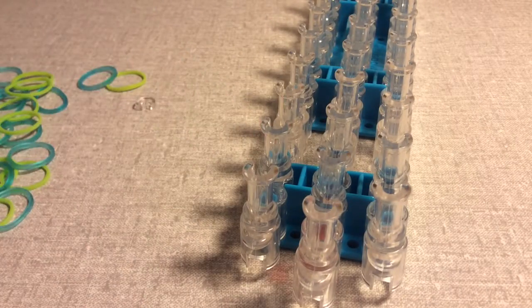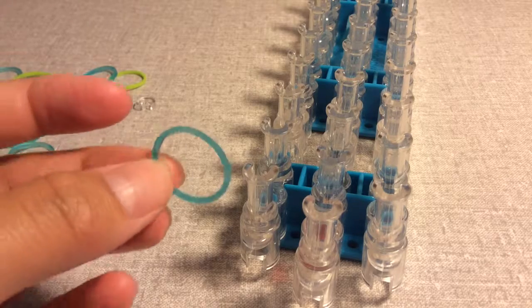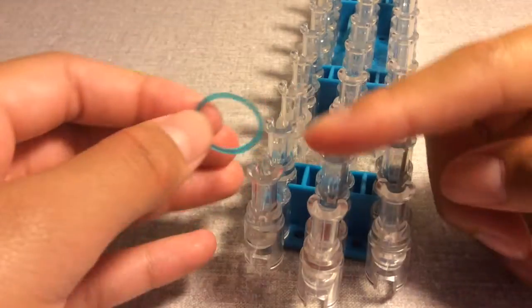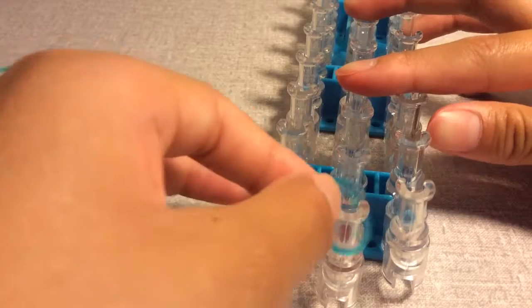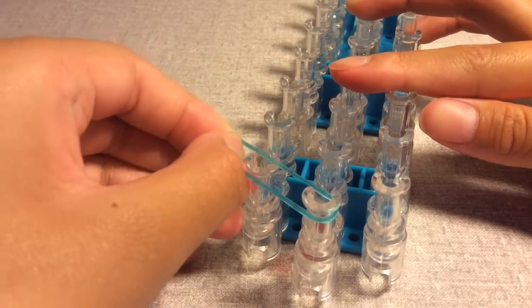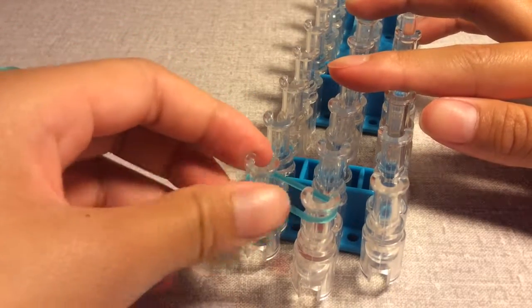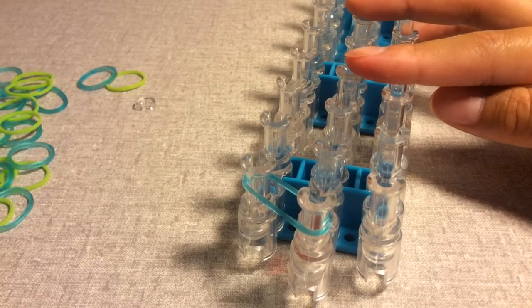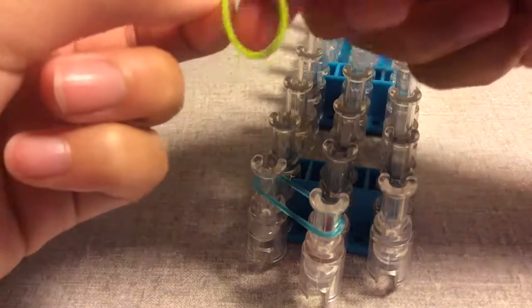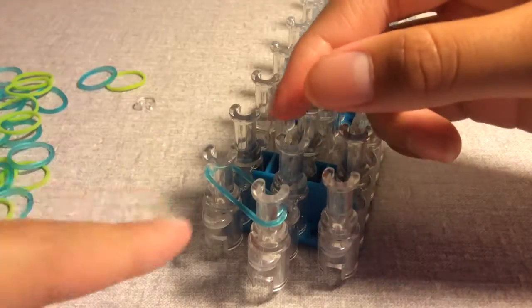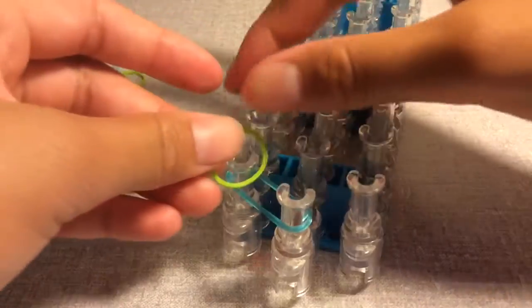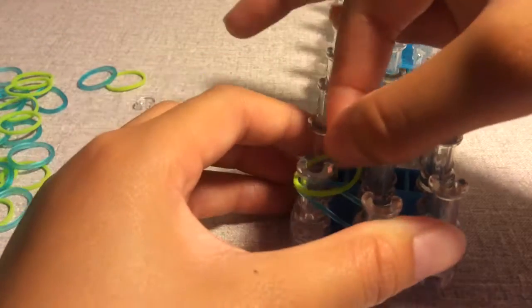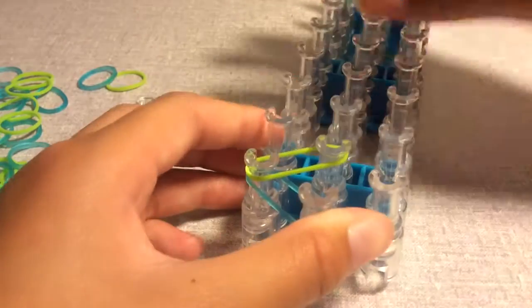you want to start with your first color, which for me is blue. And you want to start with this pin here and you want to go to the up left pin, which is right here. Then you want to take your second color, which for me is green. And once you land it on this pin, you want to start from that pin.